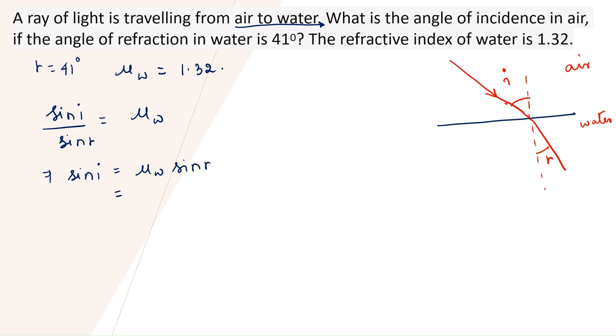Let us put the values. Mu w water is 1.32 and sine r is sine 41. So, 1.32 into sine 41 is 0.656, approximated to 3 digits.